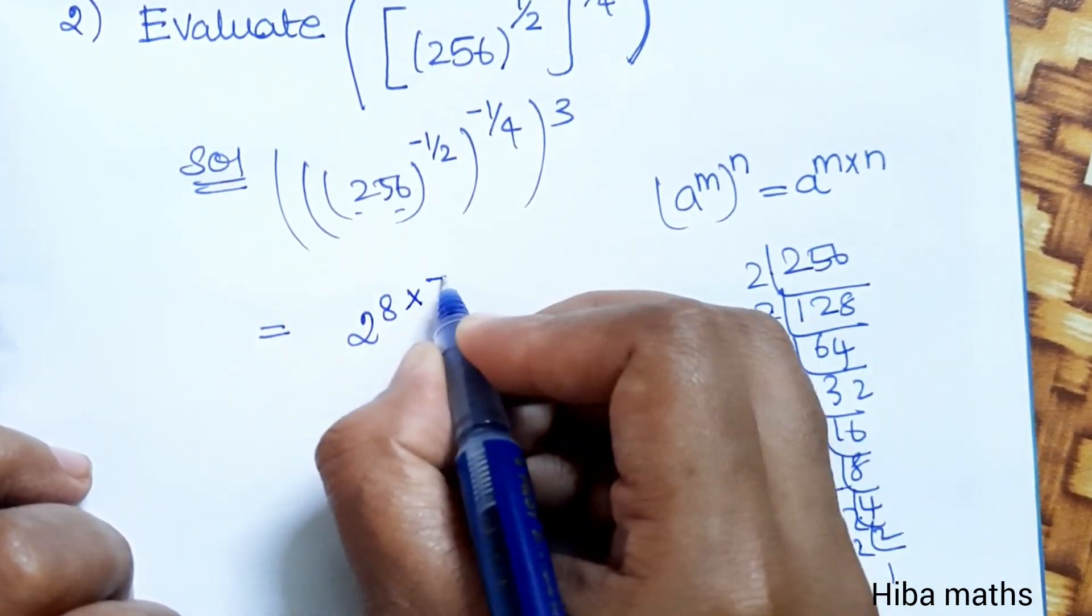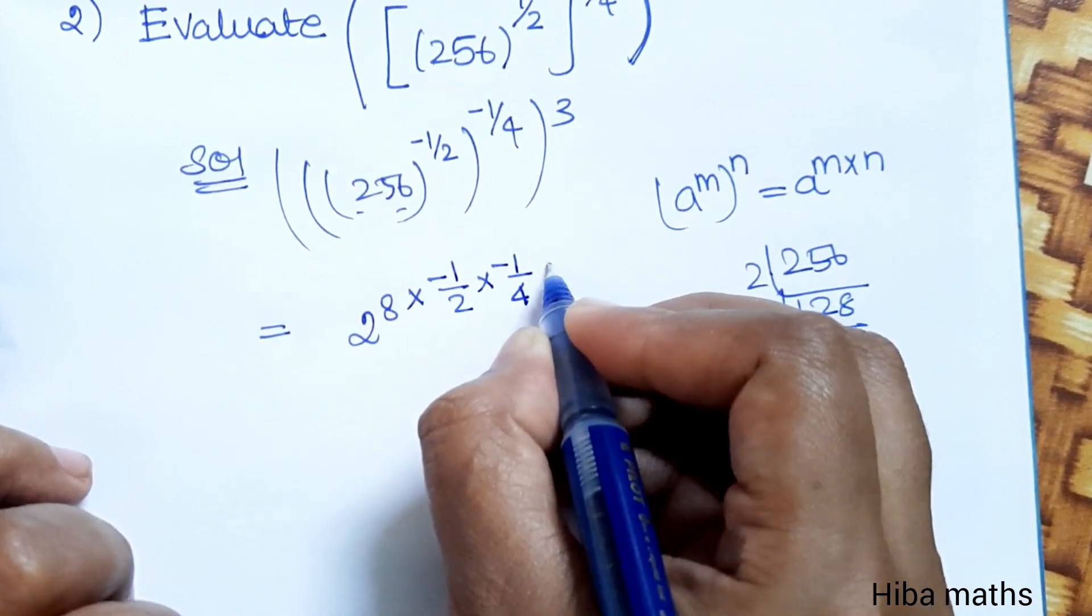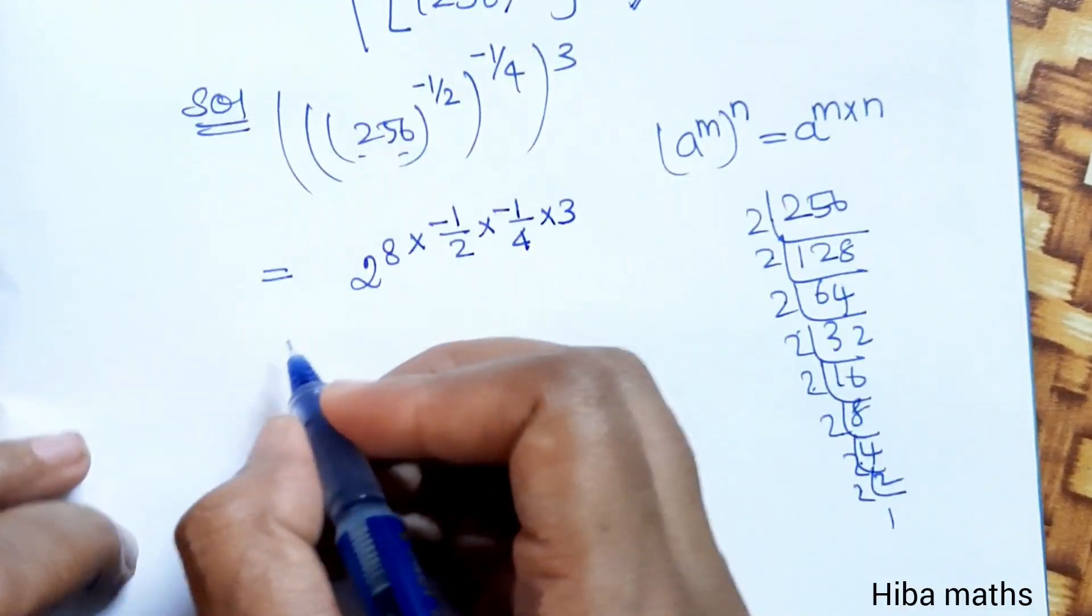Now that times minus 1 by 2, that times minus 1 by 4, that times 3.